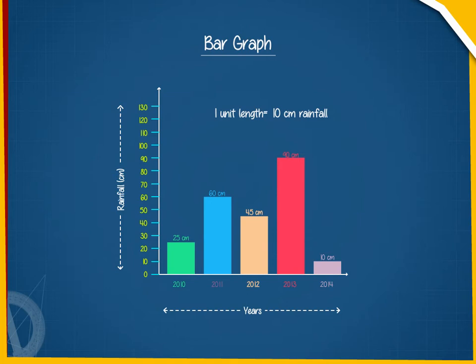This bar graph shows that in the year 2010, the city received 25 centimetre of rainfall. In 2011, it received 60 centimetre of rainfall. In 2012, the rainfall was 45 centimetres.